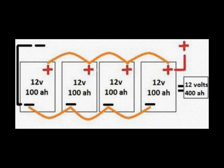As you can see in this diagram, we have four 12 volt 100 amp hour batteries. By connecting them in parallel — positive to positive and negative to negative throughout the system — you'll increase the battery size to 400 amp hours, but it will retain the 12 volt system. This is what you'll need to do if you want to increase the run time when using a 12 volt DC to AC power inverter.